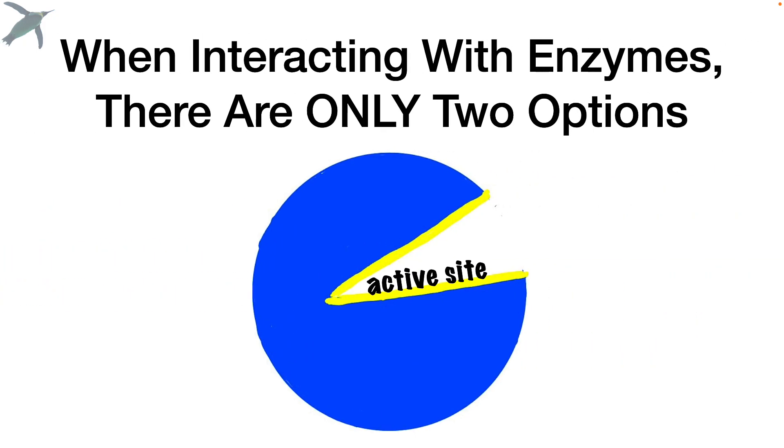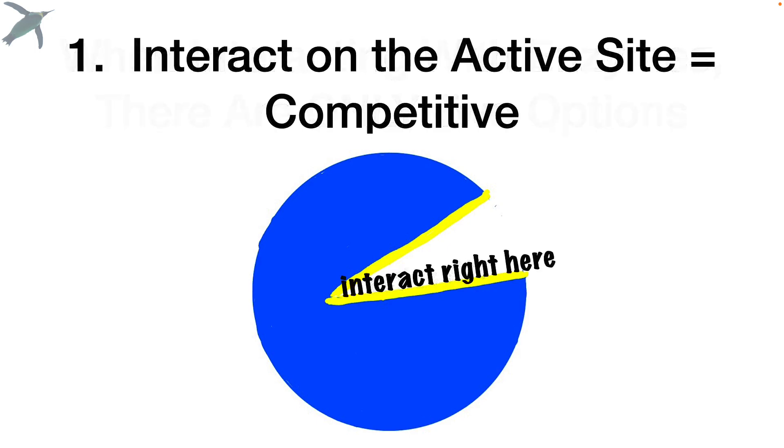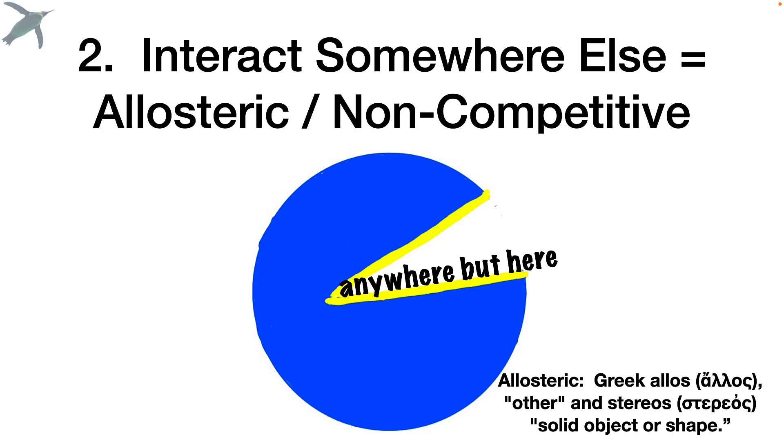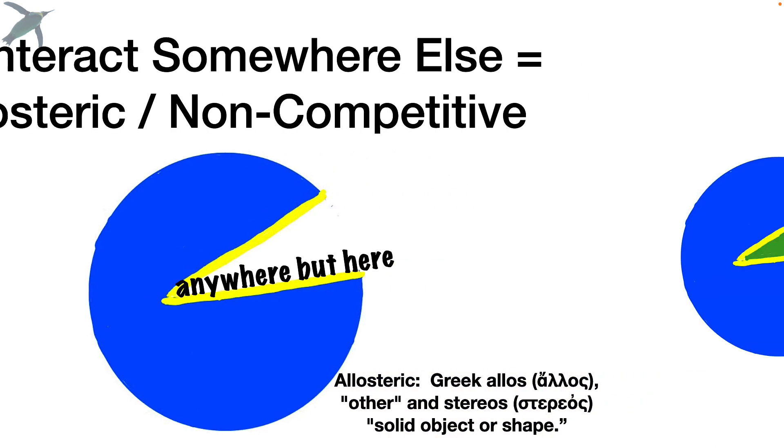Now, when you're interacting with enzymes, there are only two options. A molecule can either sit right on the active site. And in that case, we call it competitive, because it's competing with the substrate for that spot. If a molecule interacts somewhere else, we call it noncompetitive or allosteric. Allosteric means other shape.